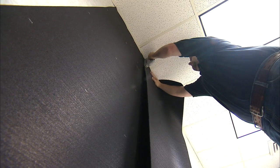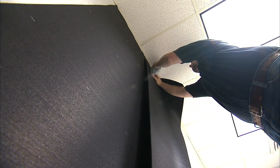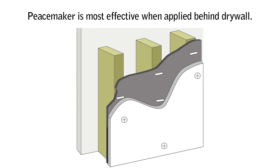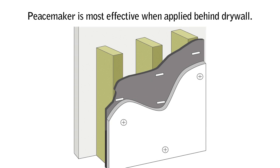Some prefer to install Peacemaker barrier over an existing wall and leave it exposed as the finished wall surface. This method does work, however our material is not intended to be the finished wall surface. Peacemaker is most effective when sandwiched in between two rigid structures, like drywall.